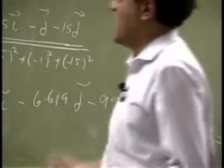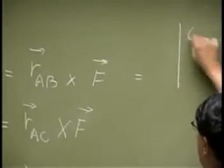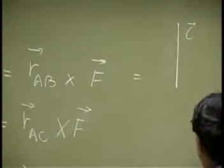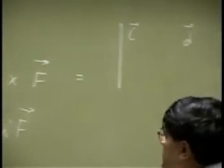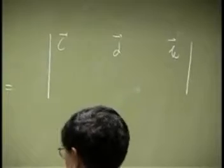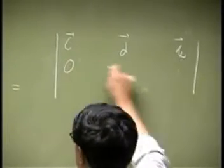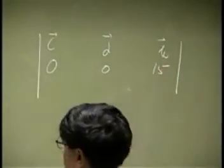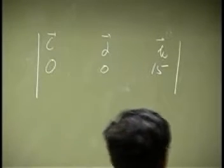So the first one is a determinant. You have i, j, and k first row. RAC or RAB, that is going to be 0, 0, 15. Then we have the force...